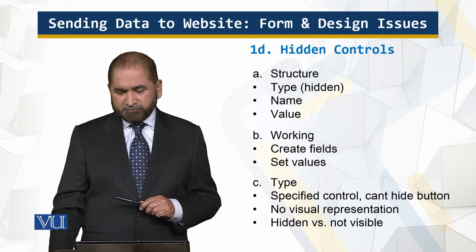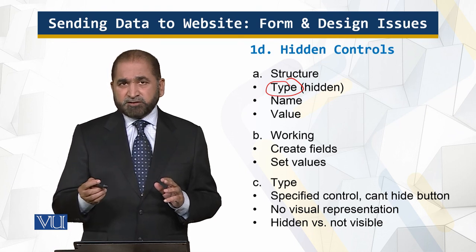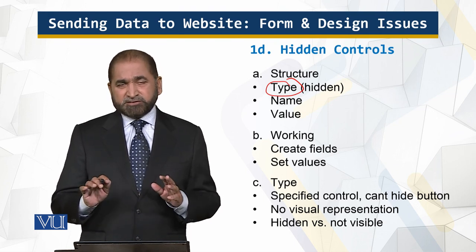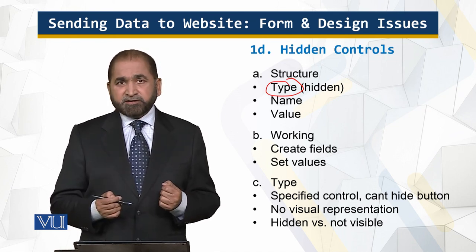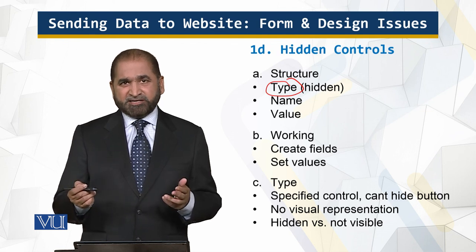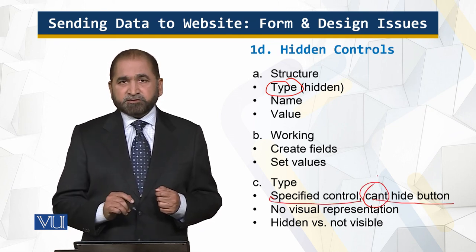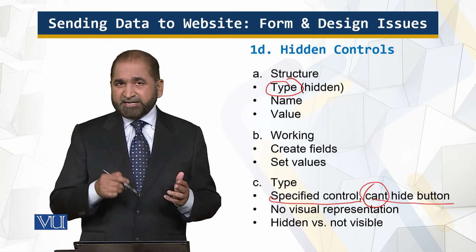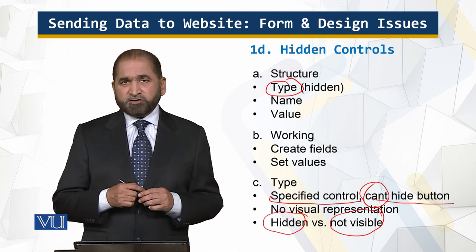Now the more challenging part: hidden controls. The type is set to hidden, and the contents are not shown. The purpose of hidden controls is passing data from one page to another. A hidden control has a name and a value like other controls — the only difference is that you don't see the contents. You can create hidden fields and assign values to them. The key difference is that the contents are not visible. Note that a hidden control cannot be applied to buttons, since buttons are displayed. There is also a distinction between a hidden control and a control that is simply not visible.